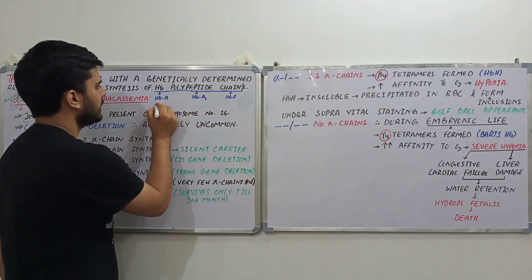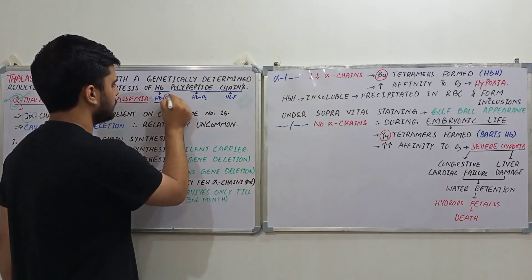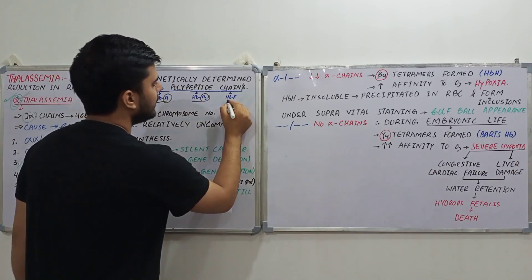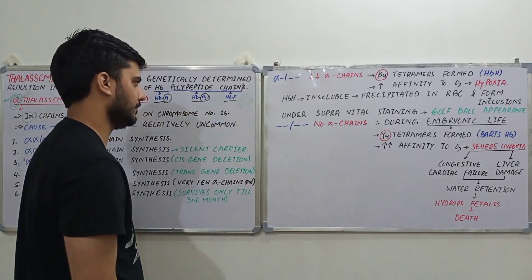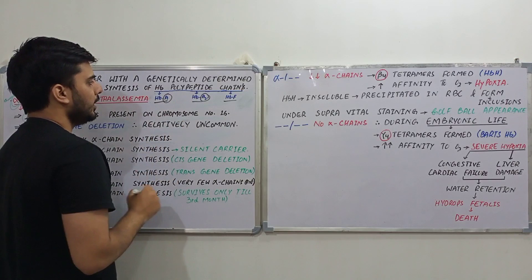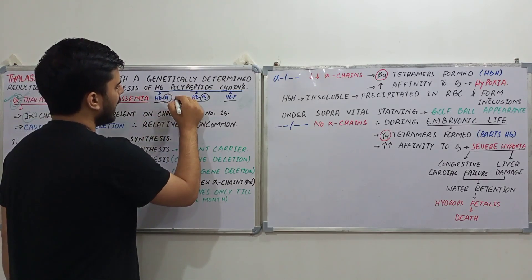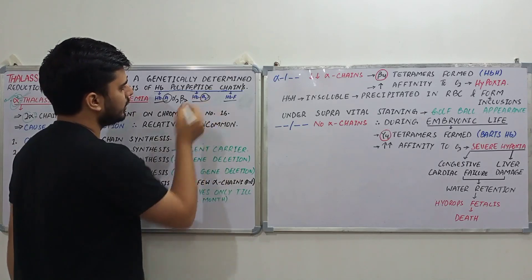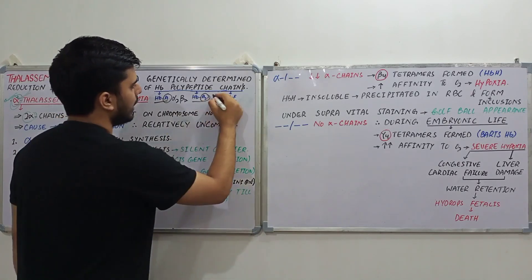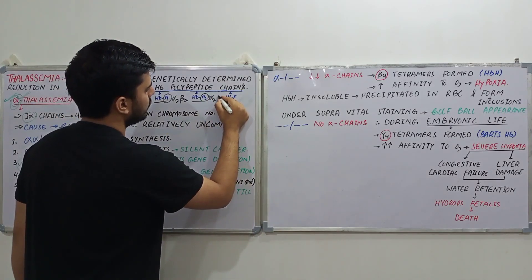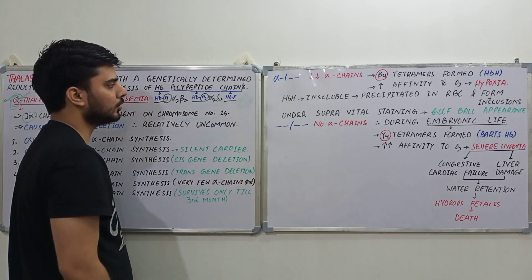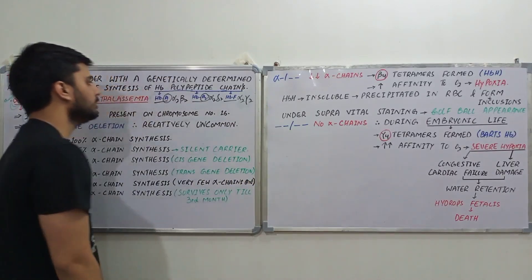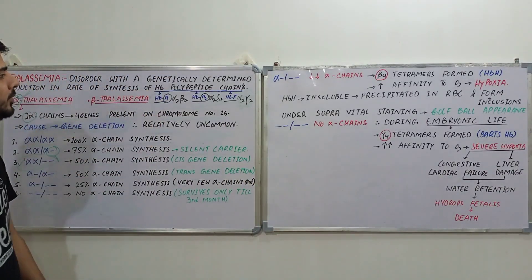We have three types of hemoglobin. One is known as HbA — A stands for adult. The second is HbA2, the second form in the adult. Then we have the fetal hemoglobin, HbF. In HbA we have two alpha and two beta chains. In HbA2 we have two alpha and two delta chains, and in fetal hemoglobin we have two alpha and two gamma chains.